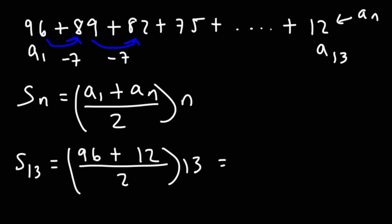96 plus 12 is 108. 108 divided by 2. That gives us 54, which is the average of the first and last terms. So if we take that average, 54, multiply by the number of terms, that will give us the sum, which is 702.